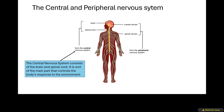Looking at a human body diagram indicating the locations of these systems: the central nervous system consists of the brain and the spinal cord. The brain is the main part in your head. The spinal cord goes down at your back inside those bones — it is a cord inside the bone spine.